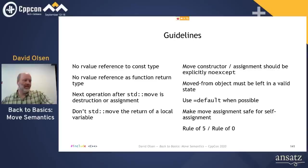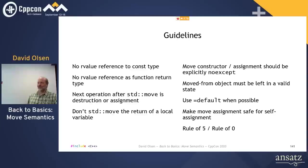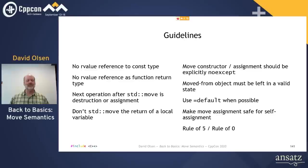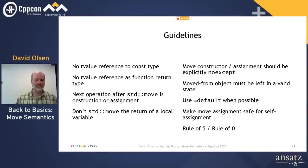Next question: Does it make sense to use move semantics for small objects without pointers and just primitive data types? If your class just has primitive data types and no pointers and doesn't own any external resources, you will probably fit into the rule of zero — you shouldn't have any need to declare a destructor or any of the copy or move operations. But if for some reason you do write a destructor, my recommendation is that you should declare the move constructor and move assignment operator, and you should be able to do them as equals-default.